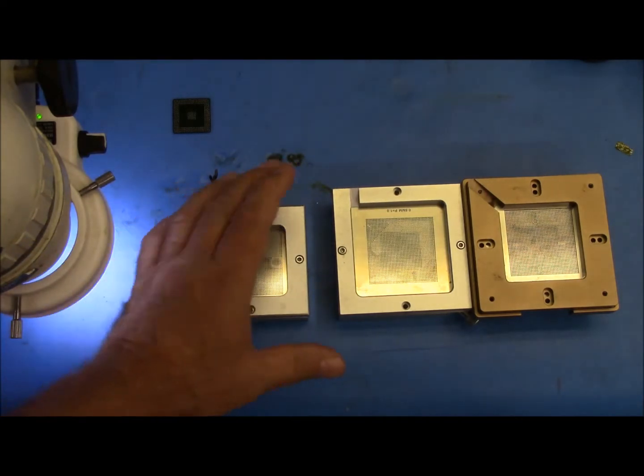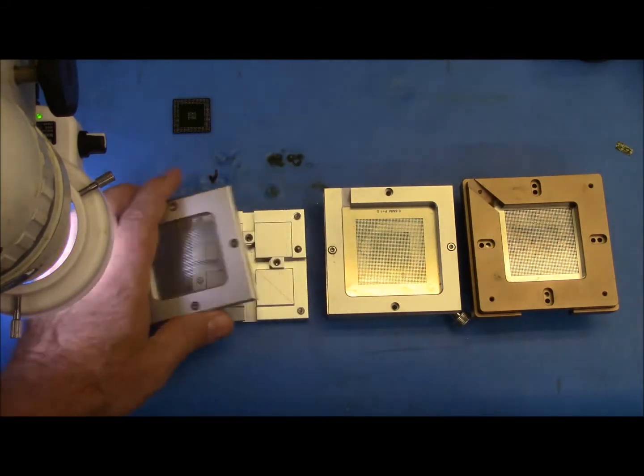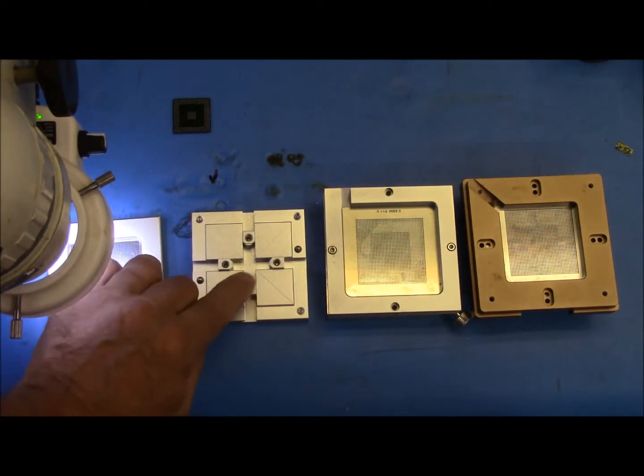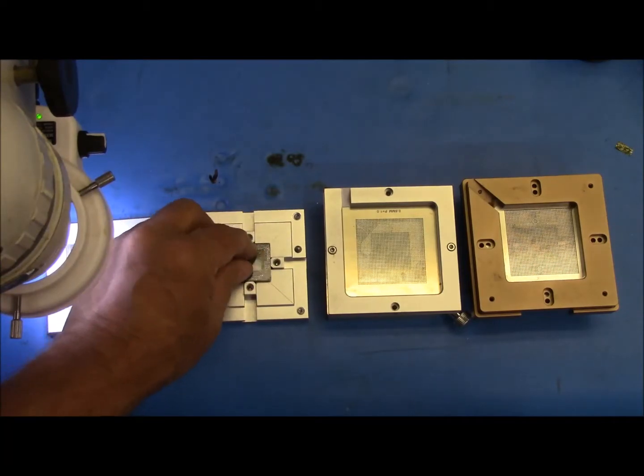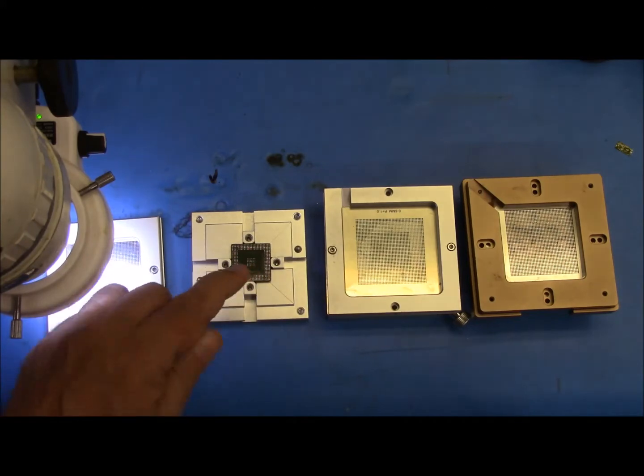You have three different types of universal reballing fixtures available. This smaller type here has the things that hold BGA chip, the little hardware, and you have to loosen up with the allen screw and move them so that you get your chip where it's just about on the crosshairs. It doesn't have to be perfect but as long as the corners are on the crosshairs.